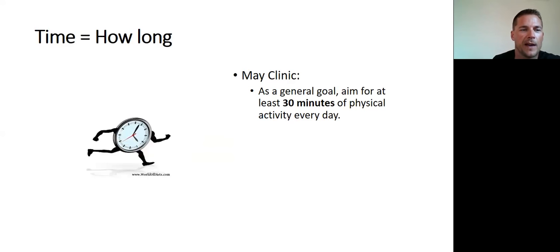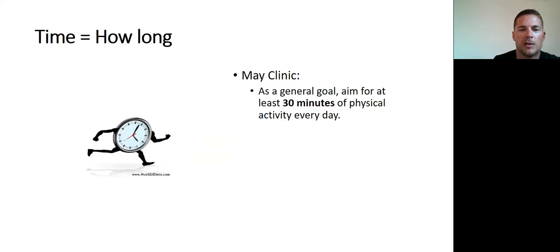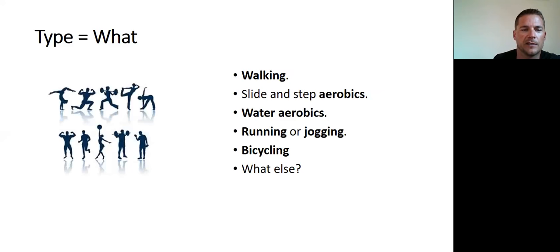Time is how long you exercise. I mentioned I like to exercise every day for 30 minutes to an hour. Don't confuse it with frequency: frequency is how many days you work out, while time is the actual minutes or hours of that session. Maybe you walk for 30 minutes, swim for 15, lift weights for an hour, or play basketball — whatever the duration of that session, that's your time.